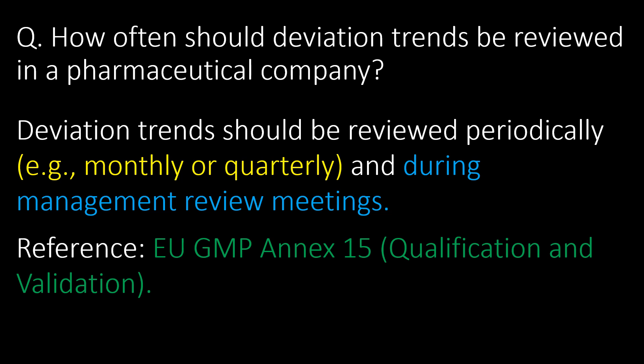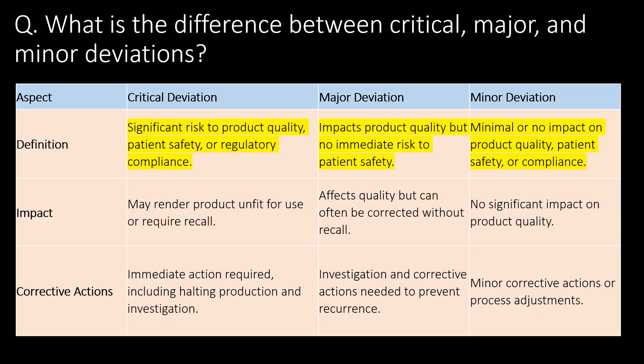How often should deviation trends be reviewed in a pharmaceutical company, or what should be the frequency for reviewing deviation trends? Deviation trends should be reviewed periodically — for example, monthly or quarterly — and during management review meetings. Reference: EU GMP Annex 15.